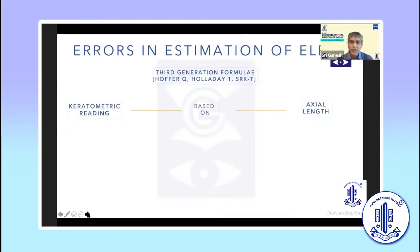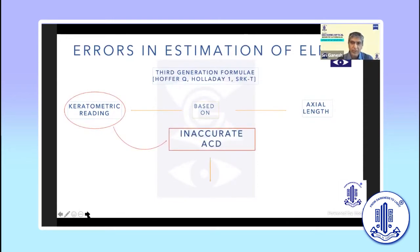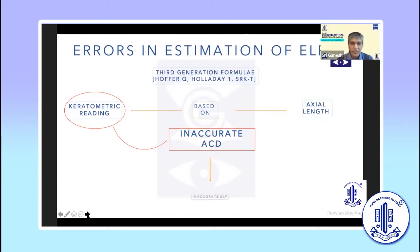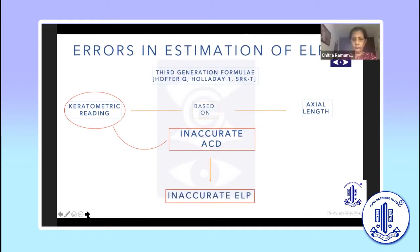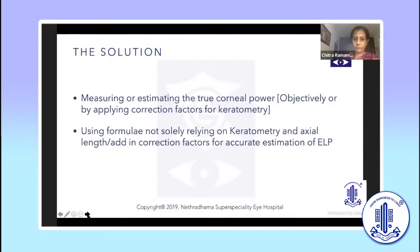When using third-generation formulae like Haigis, Holladay-1, or SRK/T, the keratometric reading and axial length are taken into consideration for anterior chamber depth estimation. But when the keratometric reading is altered due to refractive surgery, you get an inaccurate anterior chamber depth, which causes an inaccurate calculation of the effective lens position, giving rise to errors in biometry.